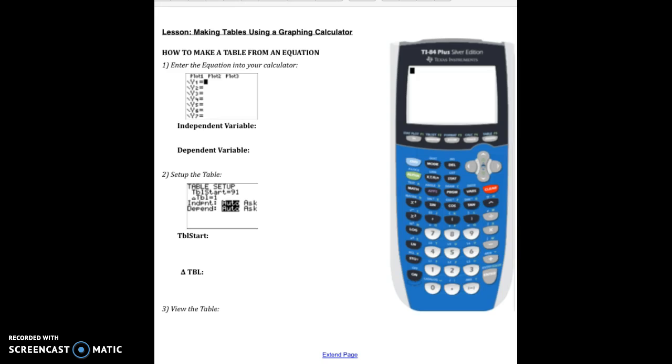So when you're trying to make a table from an equation, the first thing you always have to do is put your equation into your calculator. So we'll just do a random equation right now. We'll try to do the equation y equals 5x plus 30. So something that's going to be very important for you is that the independent variable, you're always going to have to use x for that.